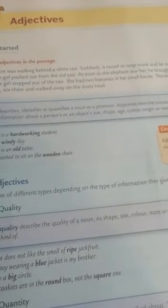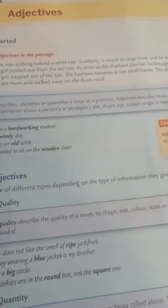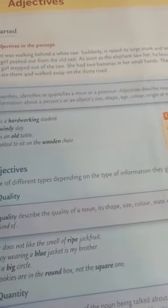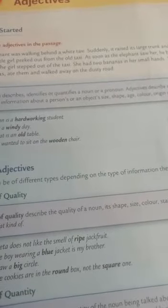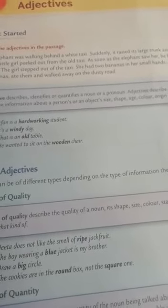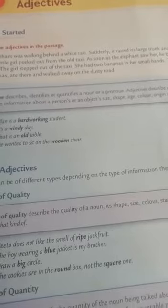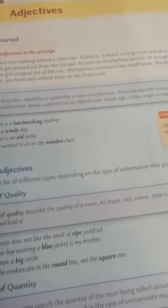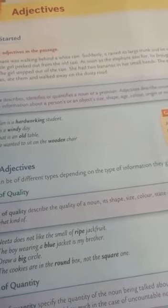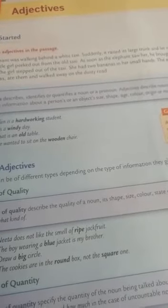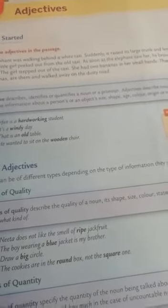Comparison of adjectives. As we know, there are three degrees of comparison: positive degree, comparative degree, and superlative degree. Example: 'I am wearing a warm cardigan because it is chilly outside.' — warm is a positive degree.